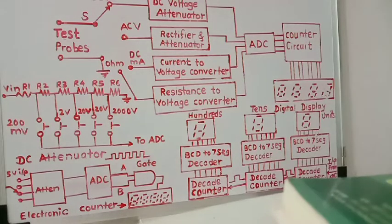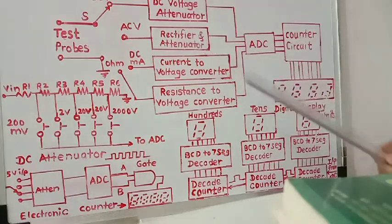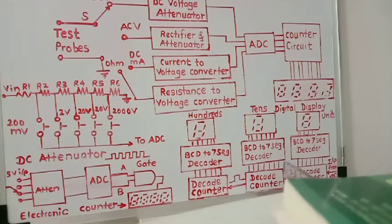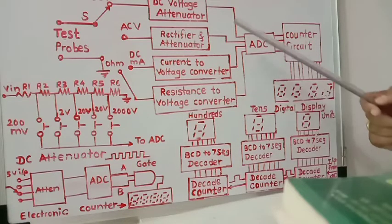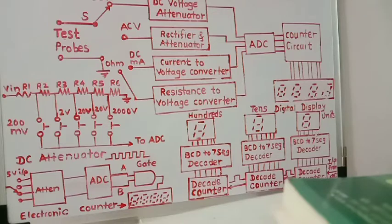This is the block diagram of the digital multimeter. In a digital multimeter there are different blocks: a DC voltage attenuator, an AC voltage attenuator and rectifier circuit, a current to voltage converter, and a resistance to voltage converter. These outputs are then connected to an analog to digital converter, and this digital signal is then fed to the counter circuit — an electronic counter which consists of a decade counter, then a BCD to seven-segment decoder and display.